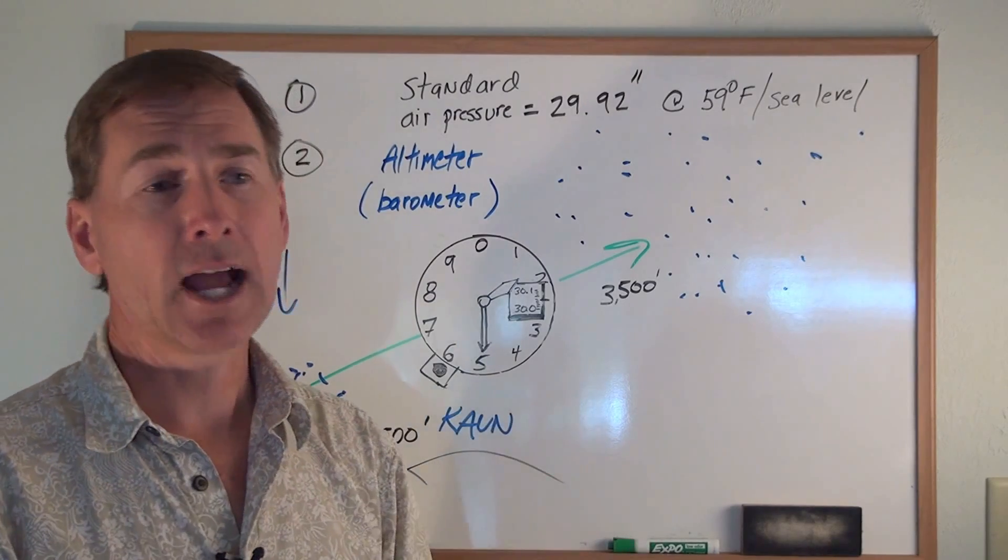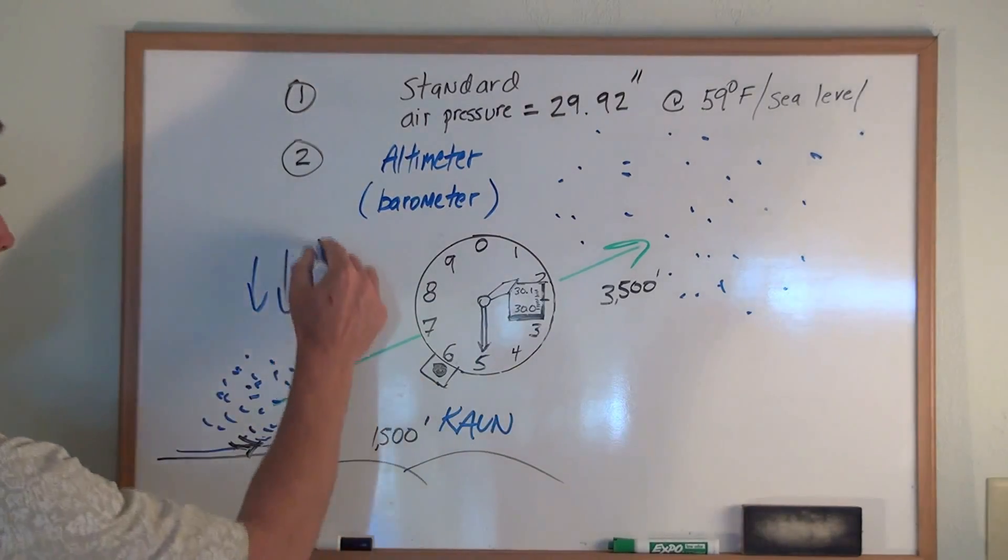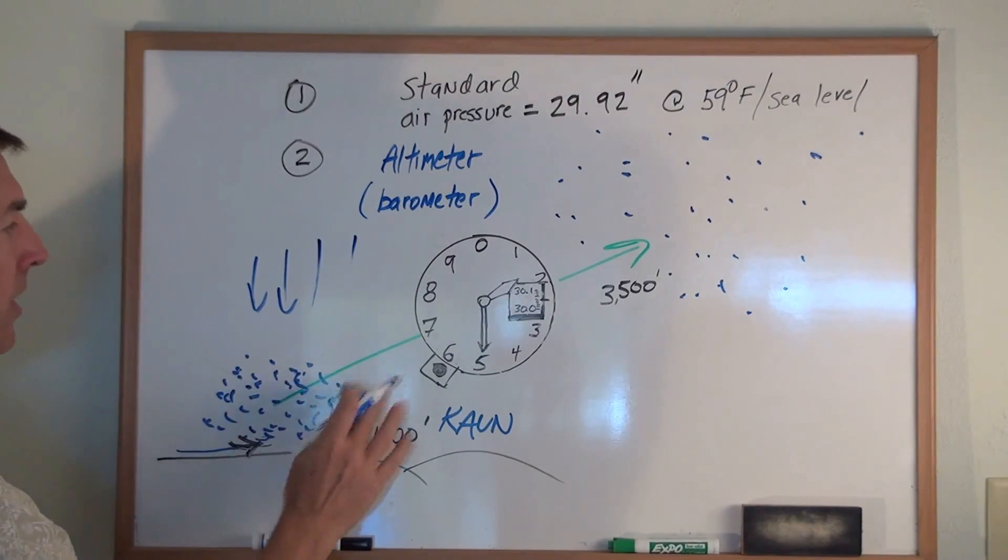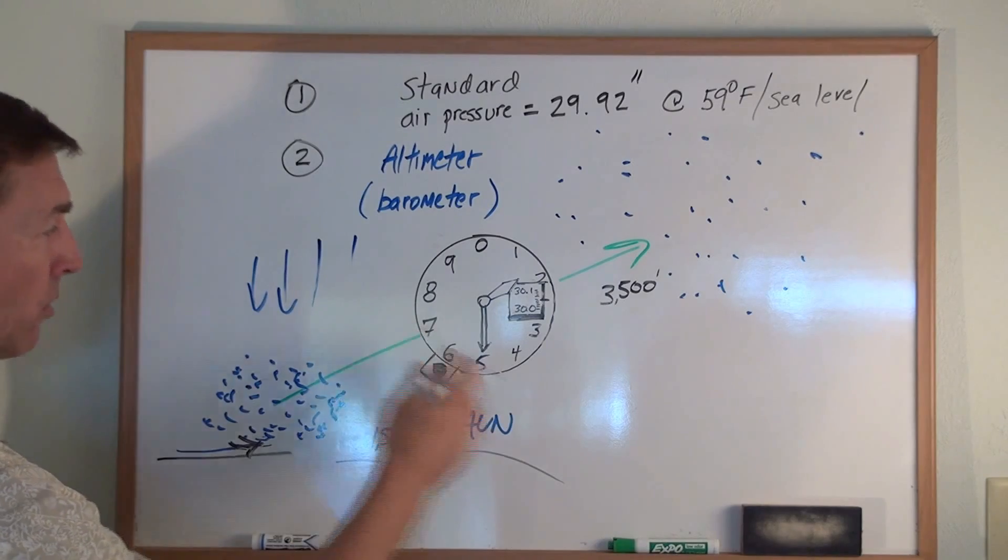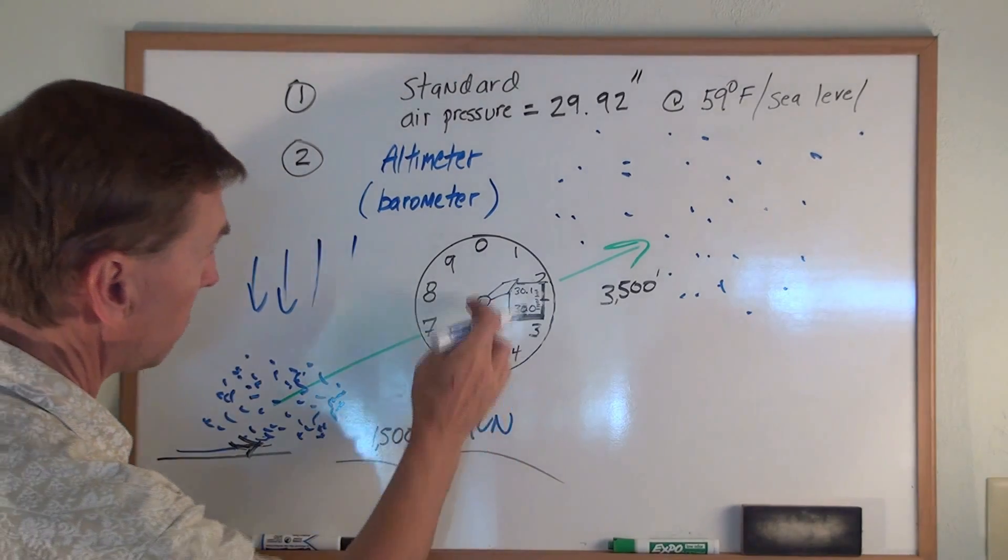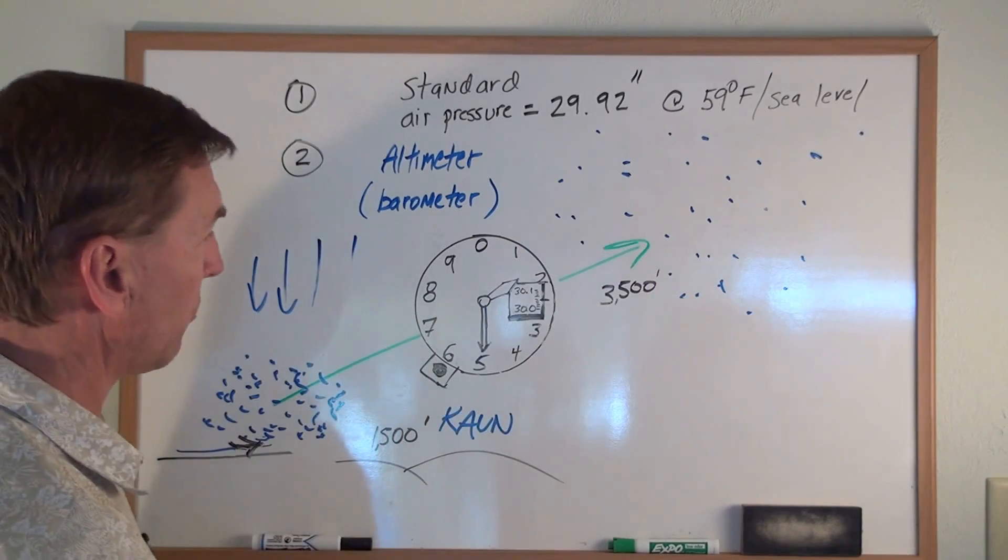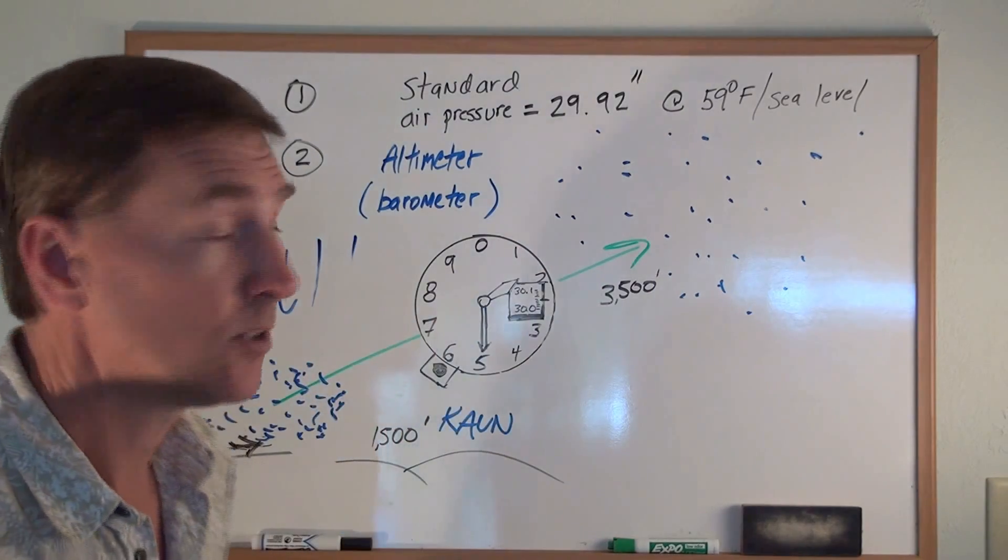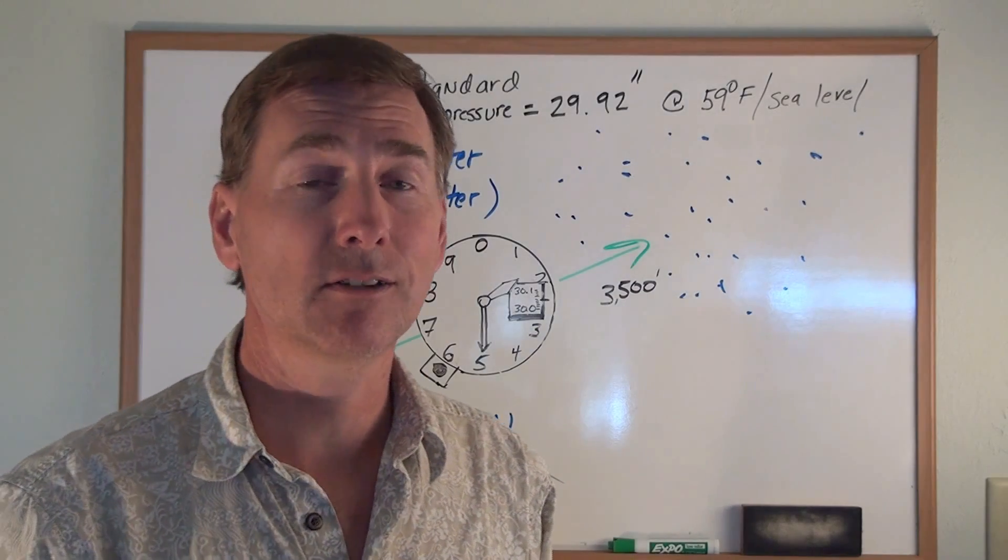A couple things could happen. One is let's say a high pressure moves in. That's air sinking, so maybe we get more dense molecules. That would change. In this case here, it would make it seem as if we were going down in elevation. It would actually make this longhand start to move this direction and maybe say we're at 1,300 feet or something like that. And of course Auburn's always the same elevation, right? It's about 1,500 feet.